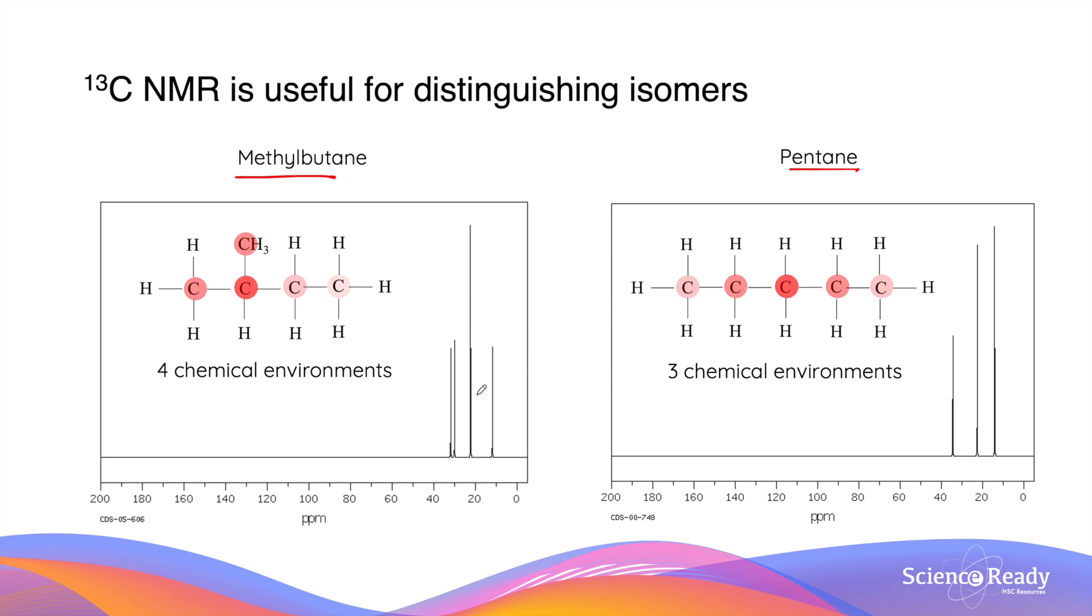So therefore, by simply counting the number of signals that's present in the carbon-13 NMR spectrum, we can identify methylbutane from pentane.